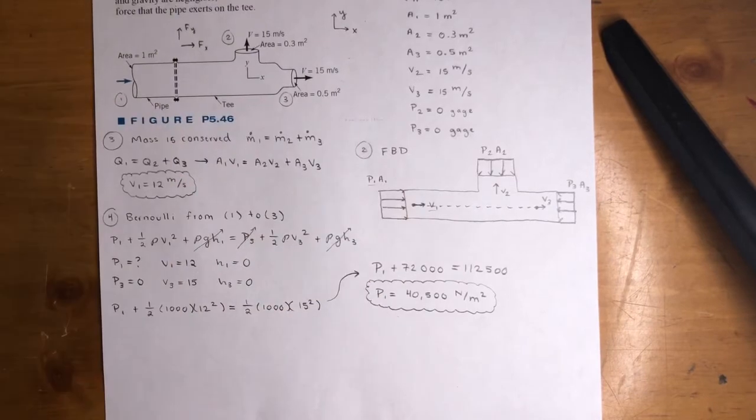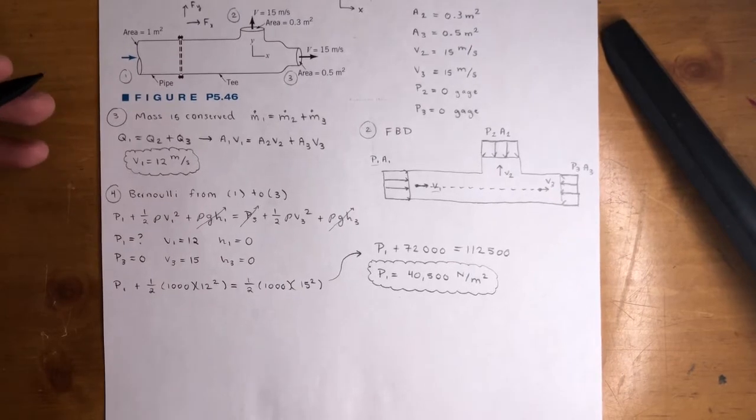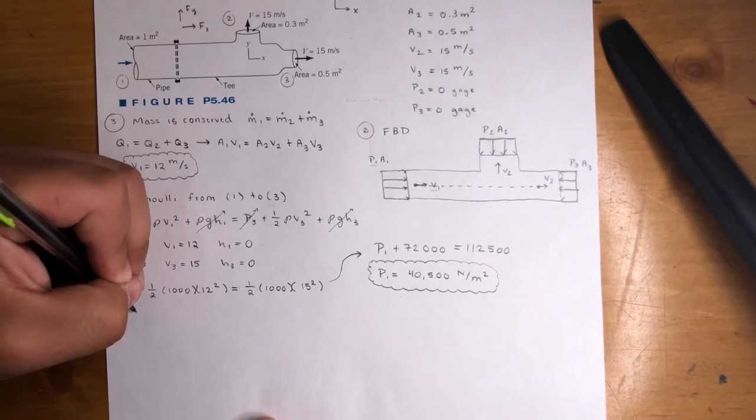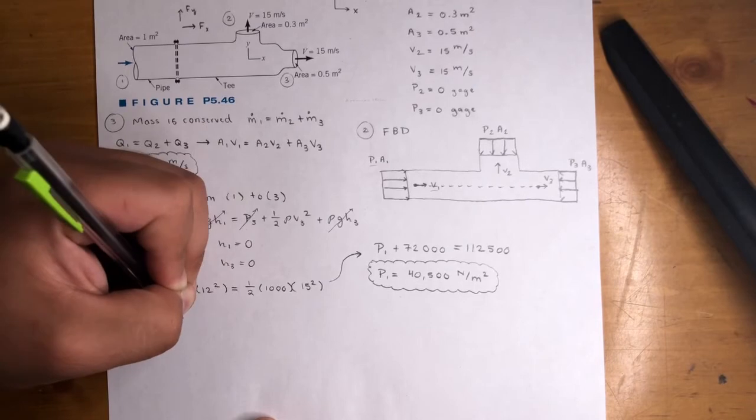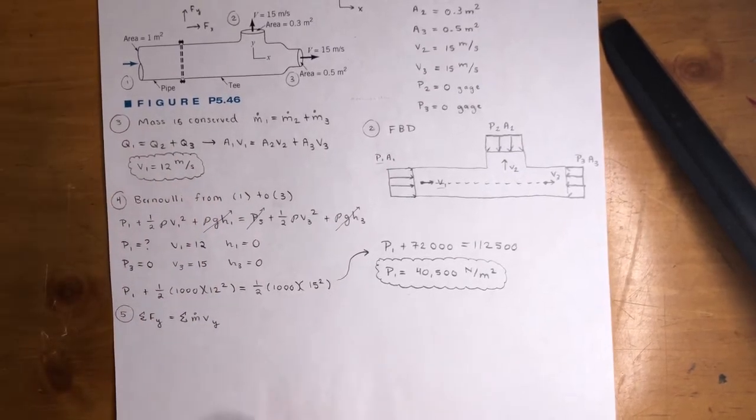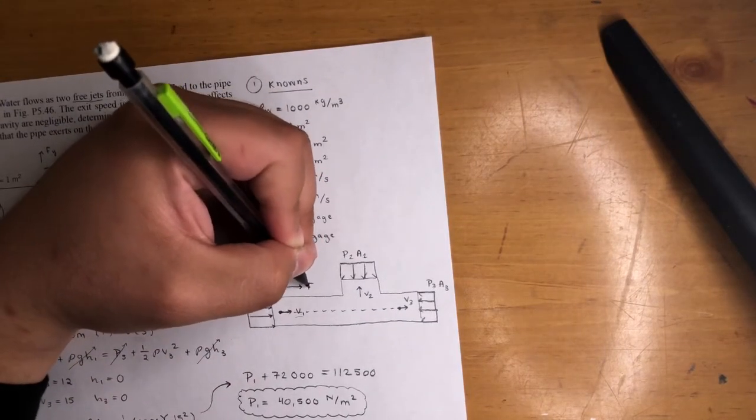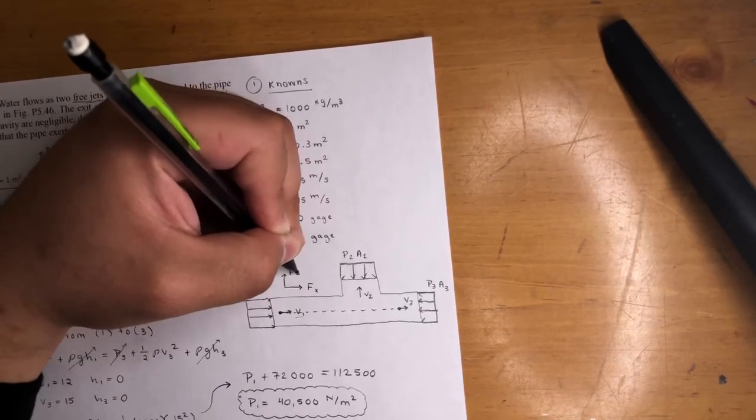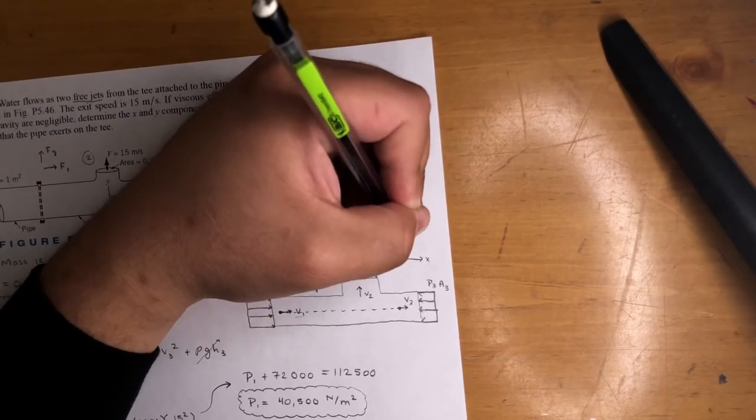Now that we have the pressure and the velocities, we can go ahead and do the linear momentum. Let's go to step 5. We can do the X or Y first, it doesn't matter. I always like to start off with Y for some reason. Sum of the forces in the Y direction equals the sum of the mass flow rates in the Y direction. We forgot the forces here. We're assuming there's a force in the positive X and a force in the positive Y. This is our conventional system.